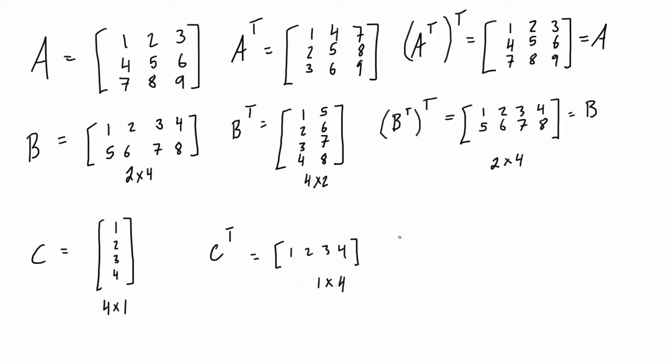And then again, just lastly, if we transpose this, transpose again, I guess you can probably see where this is going. This is just going to go right back to what C was as just one, two, three, four. All right, so that is equal to C.